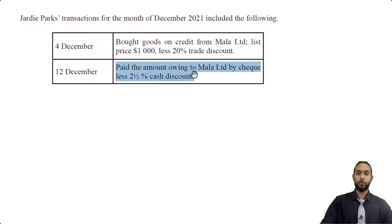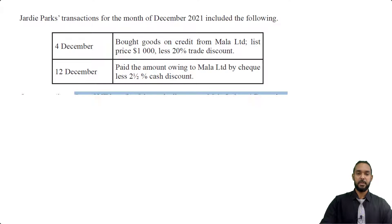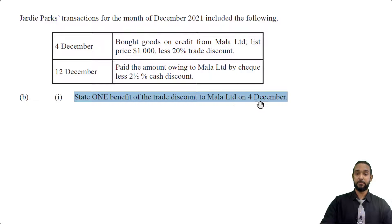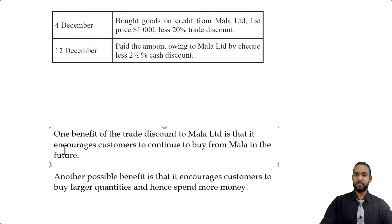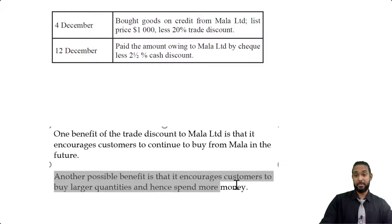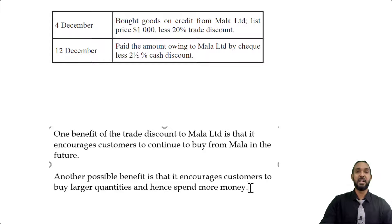On the 12th of December, we paid the amount owing to Marla Limited by cheque less 2.5% cash discount. Cash discount is recorded and it's used to encourage early repayment of debts. The question asks: state one benefit of the trade discount to Marla Limited on 4th December. The major benefit of trade discount is that it encourages customers to continue buying from Marla because they can expect a discount, reducing the amount they pay. Another benefit is that it encourages customers to buy larger quantities — trade discount is also offered for bulk buying.